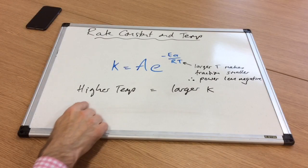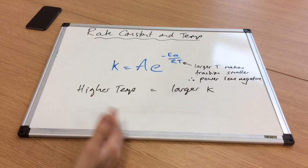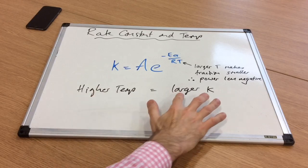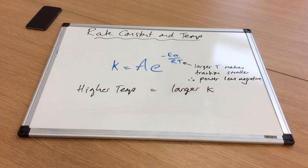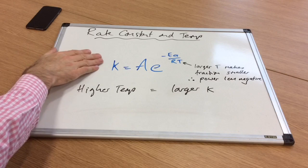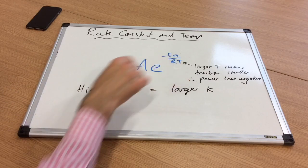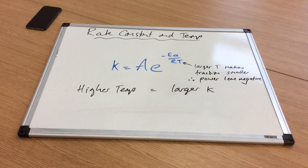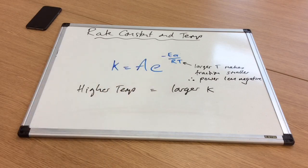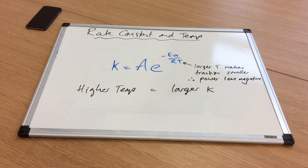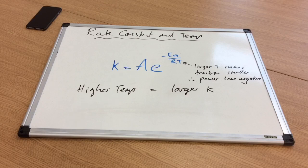We already know that a higher temperature leads to a higher rate of reaction, which means we've got a larger K. The Arrhenius equation shows us that because we're increasing the T term—a larger T makes the fraction smaller (it's a bigger denominator), so the power is getting less negative. We've got that same argument as before: 10 to the minus 4 is a lower number than 10 to the minus 1.